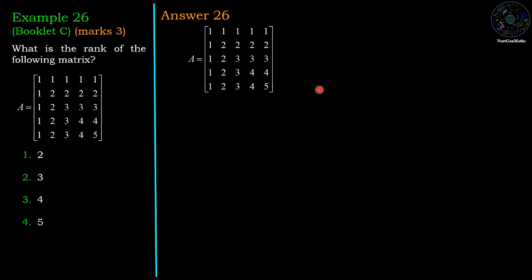We apply row operations. First row operation: multiply 4th row by minus 1 and add to the 5th row. Then we have 0, 0, 0, 0, 1.